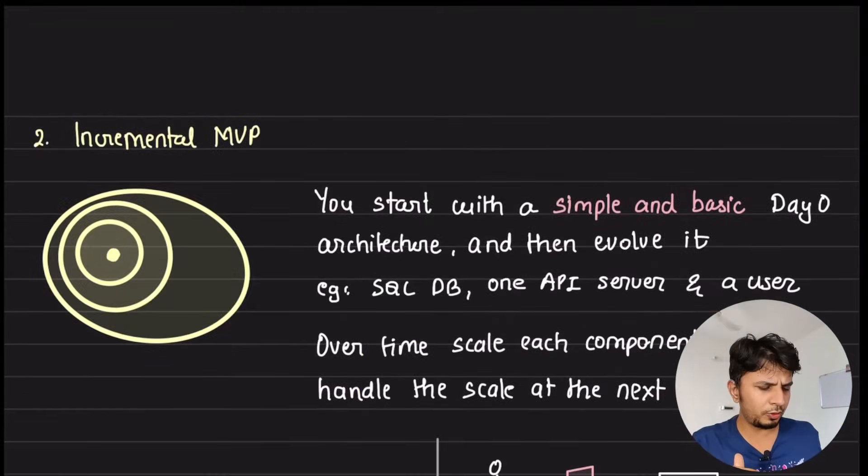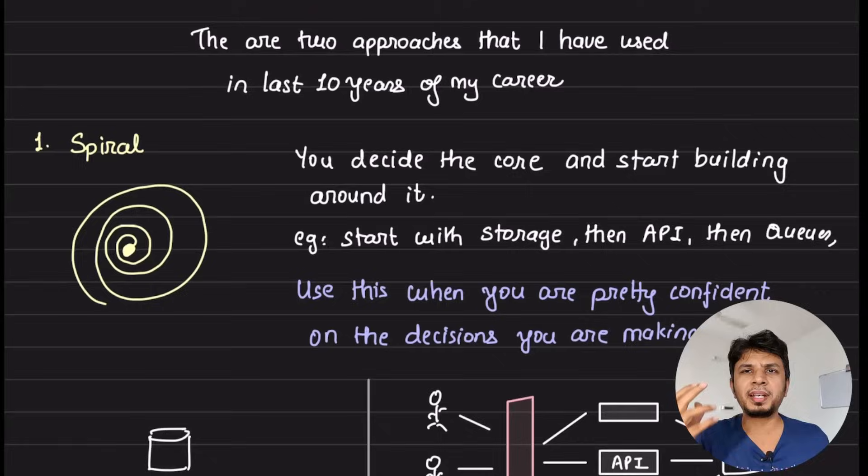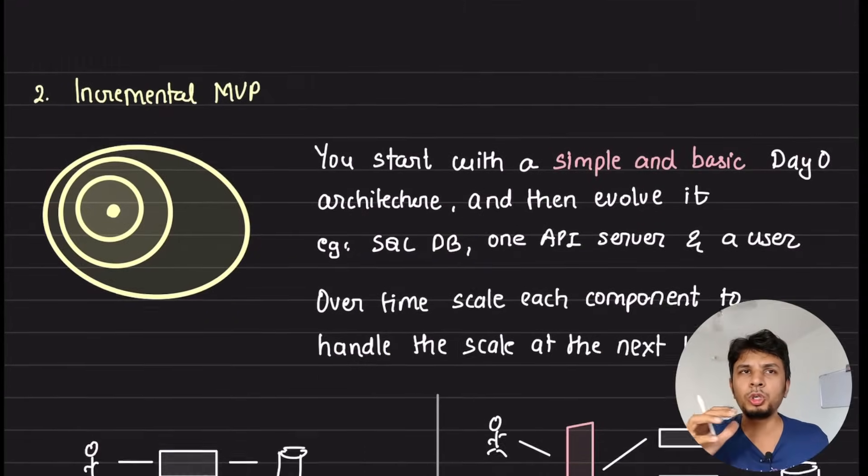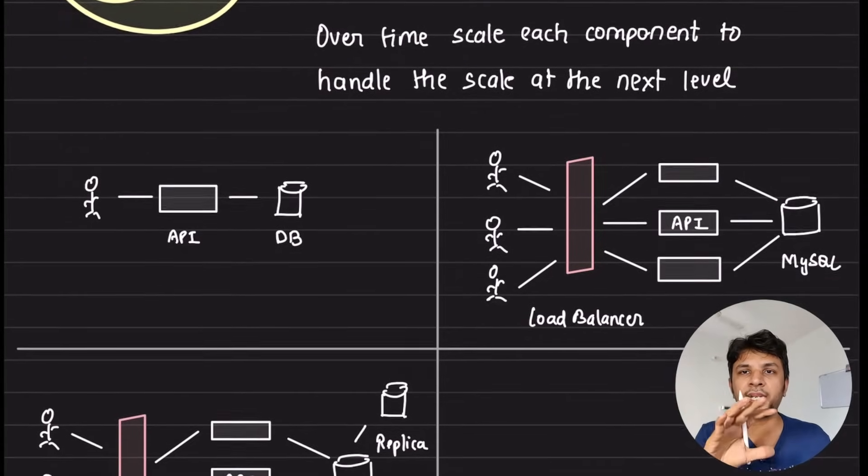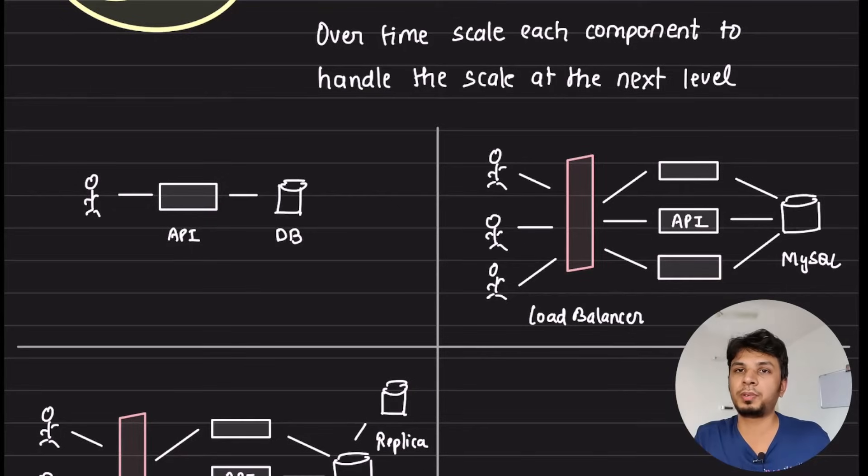For example, if you know the solution very well, go for a spiral based approach. If you don't know the solution very well, start with the day zero architecture and then scale individual components out, break it into other services.